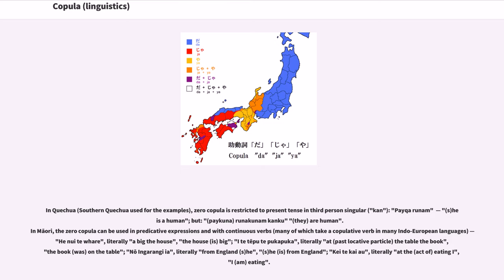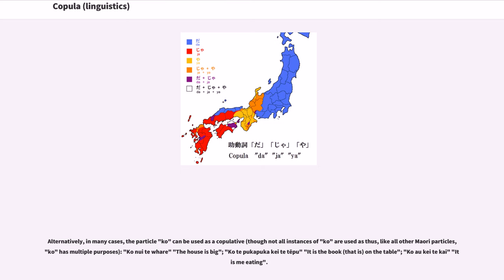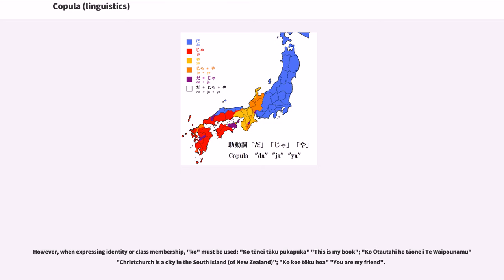In Maori, the particle 'ko' can be used as a copulative, though not all instances of 'ko' are used as such — like all other Maori particles, 'ko' has multiple purposes. However, when expressing identity or class membership, 'ko' must be used: 'ko tō nui tāku pukapuka' (this is my book), 'ko Ōtautahi he tāone nui i te Waipounamu' (Christchurch is a city in the South Island of New Zealand), 'ko koe tōku hoa' (you are my friend). When expressing identity, 'ko' can be placed on either object in the clause without changing the meaning.